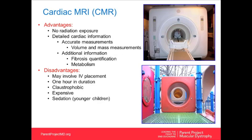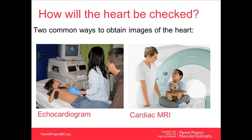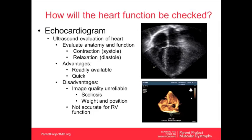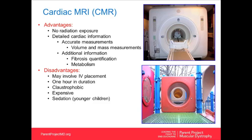Both the right and left ventricles are affected in Duchenne muscular dystrophy, but most concerning is dysfunction of the left ventricle — the left-sided pumping chamber. Cardiac MRI is an exciting way to image the heart, allowing us to see things we hadn't seen before and to think about the disease in new and important ways. Cardiac MRI offers advantages of no radiation exposure, detailed cardiac information, accurate volume and mass measurements, and the ability to visualize heart muscle scarring.